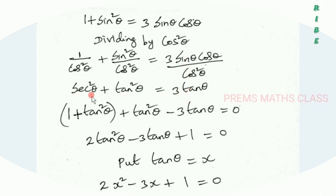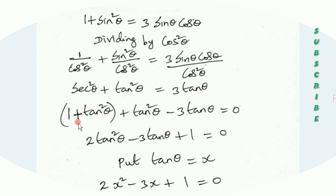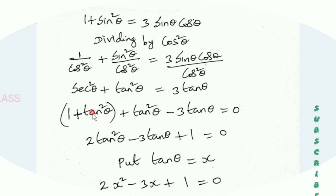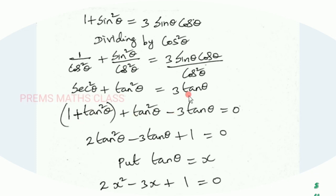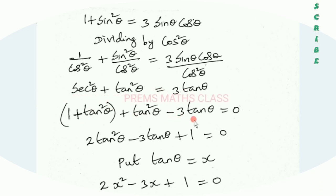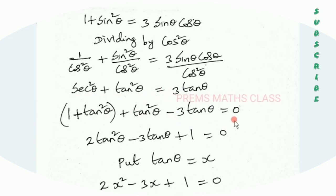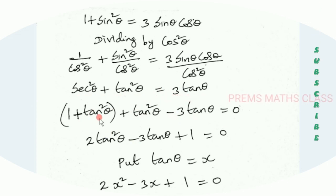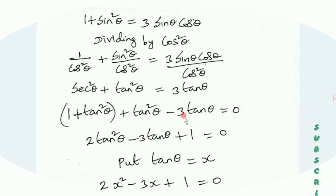Now sec squared theta can be written using the identity: sec squared theta equals 1 plus tan squared theta. So we get 1 plus tan squared theta plus tan squared theta equal to 3 tan theta. Bringing 3 tan theta to the left hand side gives minus 3 tan theta, and tan squared theta plus tan squared theta equals 2 tan squared theta. So we have 2 tan squared theta minus 3 tan theta plus 1 equal to 0.